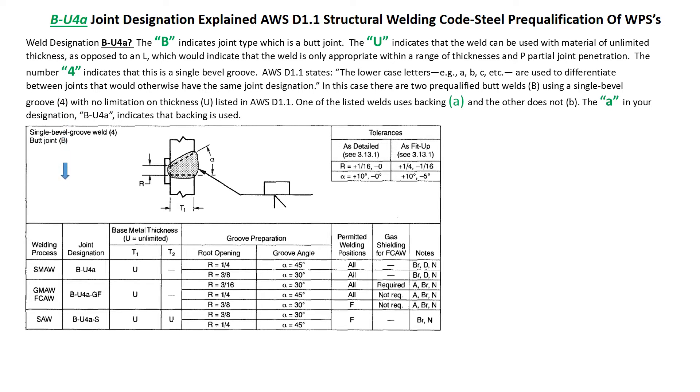Let's discuss B-U4A. The letter B indicates the joint type, which is a butt joint.